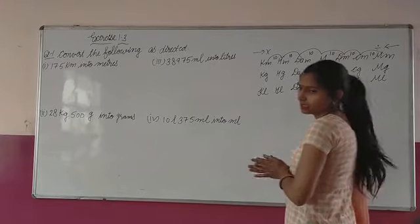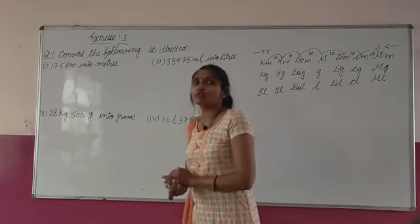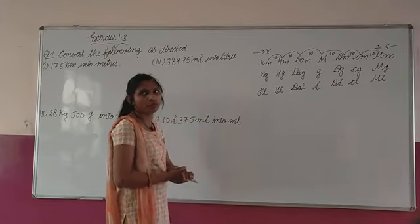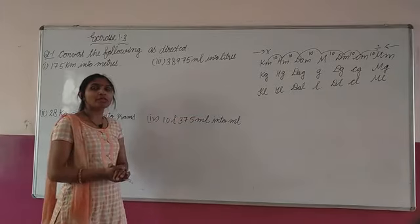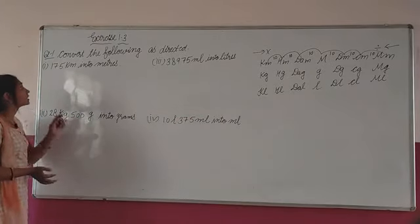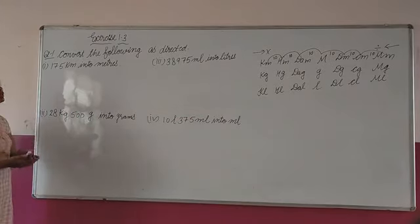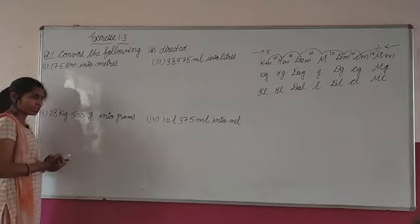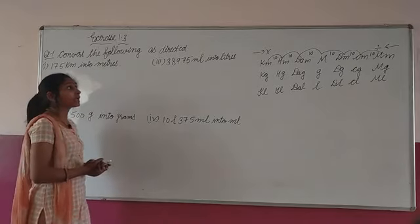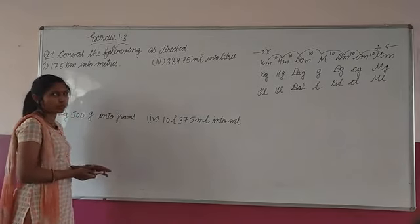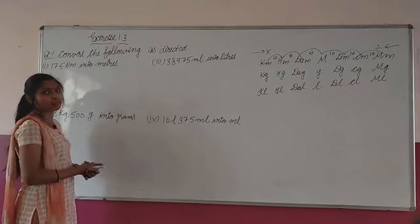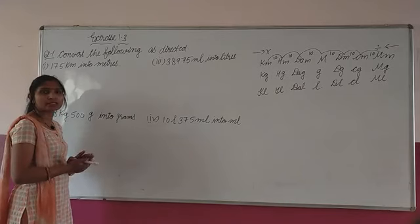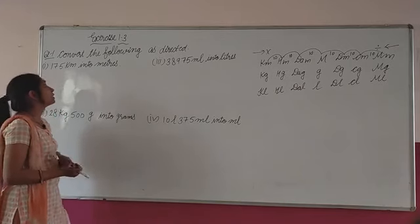Dear students, now exercise 1.3, question number 1. What is the statement of the question? Convert the following as directed. Humi directly unko convert karna hai. Measurement table we have already discussed.